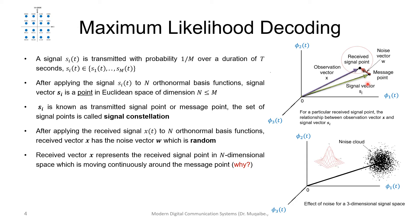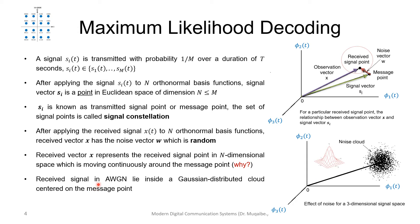If we keep tracking point after point, we'll find a cloud of points. Assuming Gaussian noise, we'll have a two-dimensional distribution. The received signal under AWGN lies inside a Gaussian-distributed cloud centered at the transmitted point. If you look at the 3D view, it looks like a bell shape — as you go away from the center, you have fewer points scattered around.